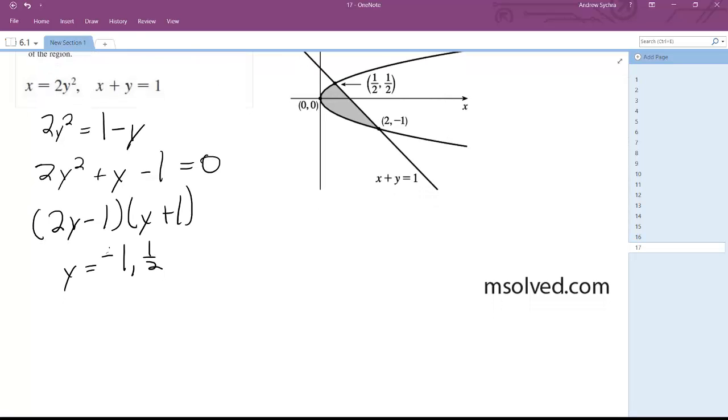Okay, and solving for this then, the area is going to be equal to the integral from negative 1 to 1 half of 1 minus y minus 2y squared dy.